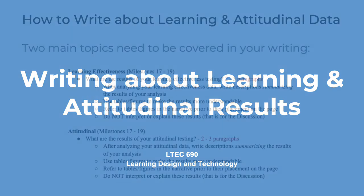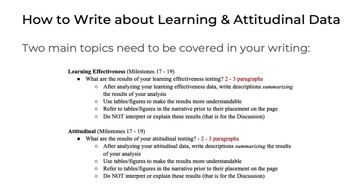Now, if you've studied the paper outline, you know that the results section must include, in addition to your usability findings, details about two other main topics: your learning effectiveness results and your attitudinal results.